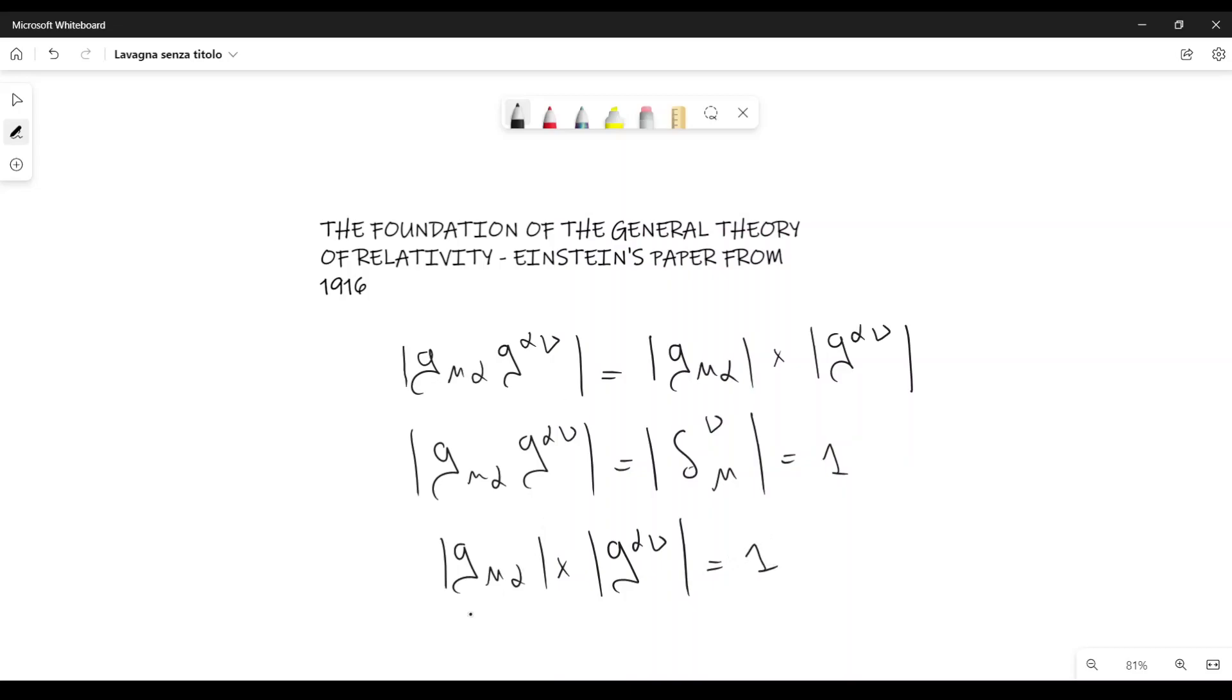Now let's call the determinant G mu nu or G mu alpha, whatever you want, like this. We call it G.